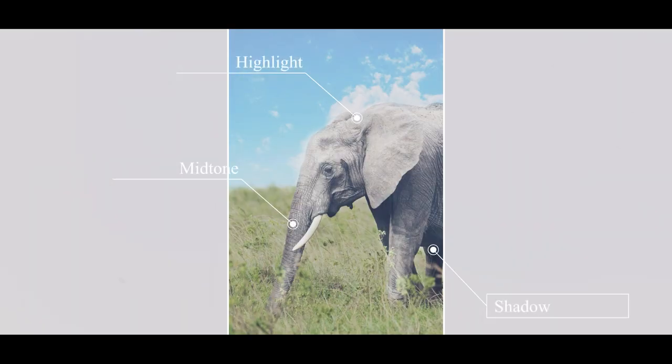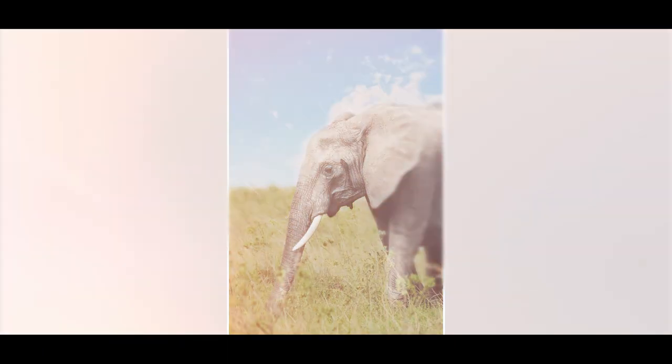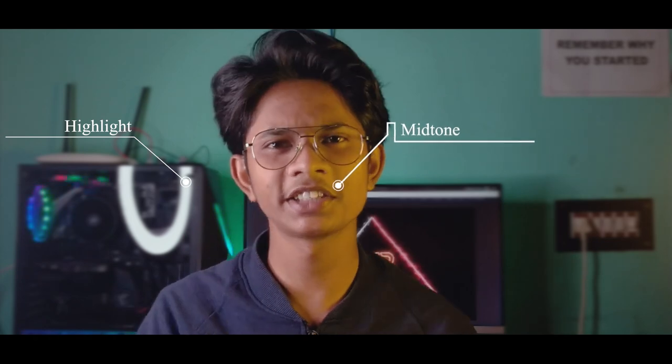We are going to look at the camera on our smartphone. Highlight, mid-tone, and shadow. The brightest and lightest portion is the highlight. The darkest portion is the shadow, and the middle one is the mid-tone. We are going to calculate the brightest portion or the darkest portion, balance them, and provide the best result.